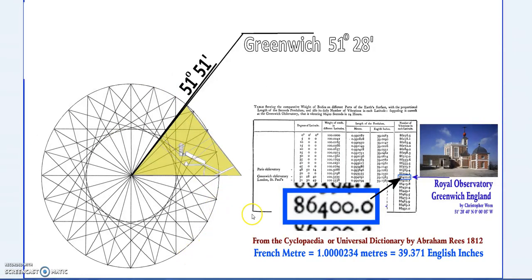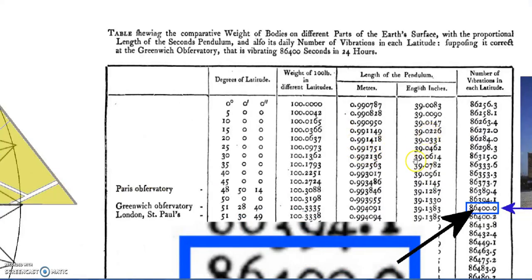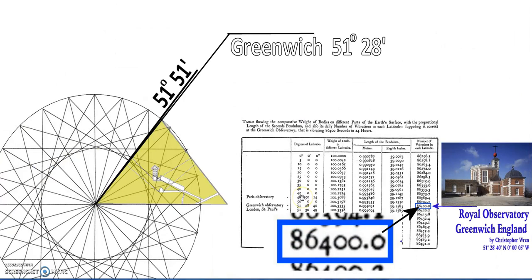The further north or south you are from the equator, it affects not only the pendulum but even weights. At the equator, 100 pounds weighs 100 pounds. The further you get from the equator, the weight of the pound actually changes.